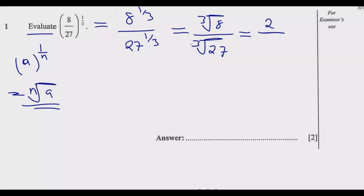Next, we look at 27: which number can you multiply by itself 3 times to get 27? 1×1×1 = 1, 2×2×2 = 8, and 3×3 = 9, then 9×3 = 27. So that number is 3 — multiply 3 by itself 3 times to get 27. Therefore, the answer is 2 over 3.